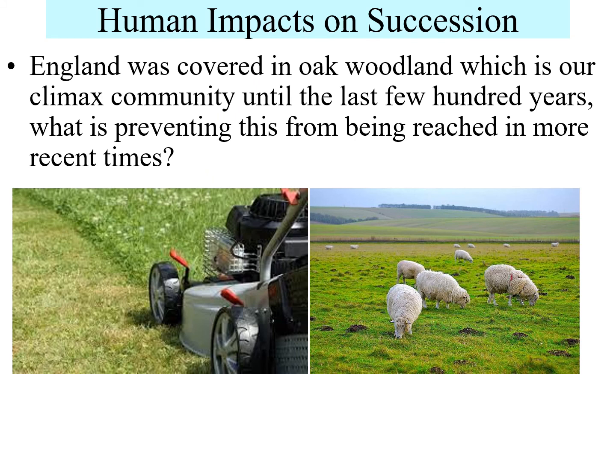Succession would naturally occur and all populations would reach climax communities if humans weren't here. But humans do impact succession — not necessarily badly, but we do stop it. In England, for example, we mow grass frequently, keeping it at a basic grass level so larger species can't grow tall enough to catch sunlight. We also use sheep herding in fields, where the sheep keep eating and keep vegetation low. With frequent mowing, only smaller grasses survive, which lowers biodiversity. If mowing intervals were longer, further succession could occur.